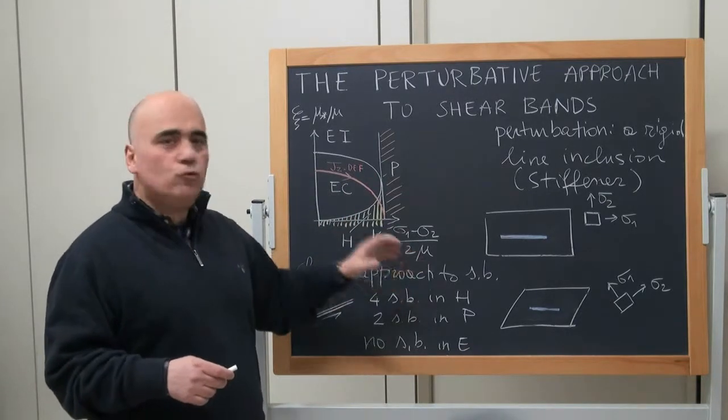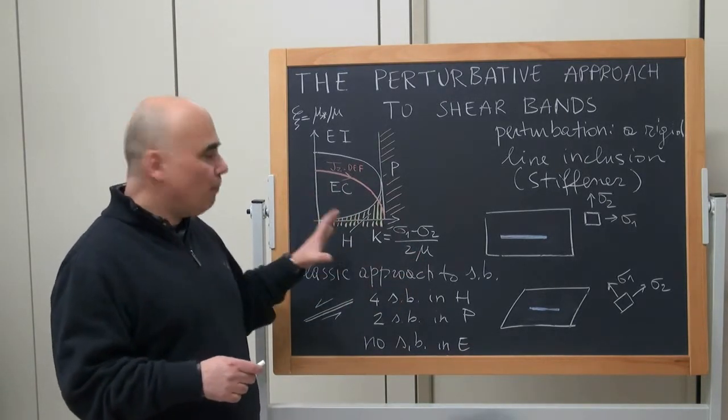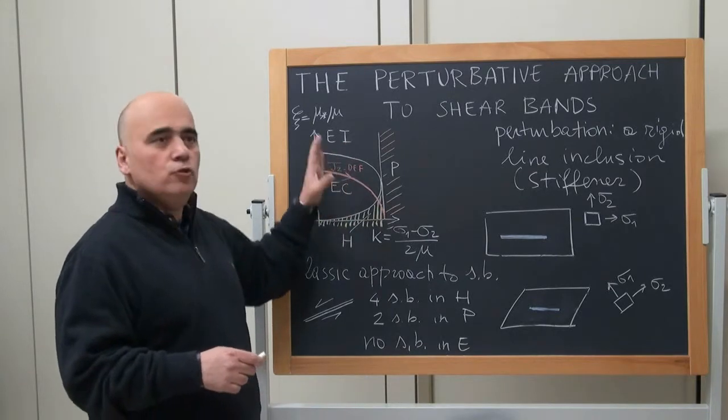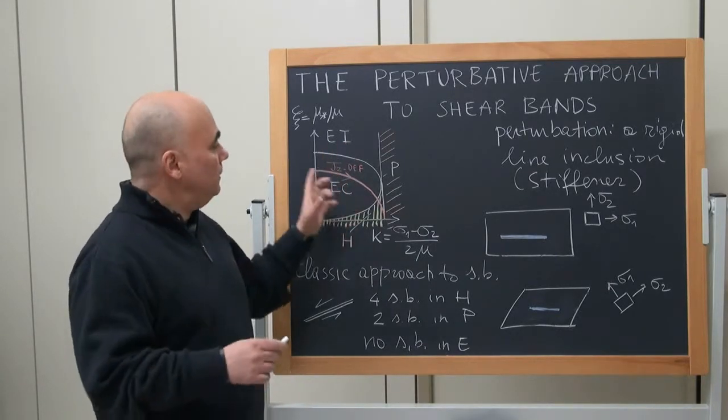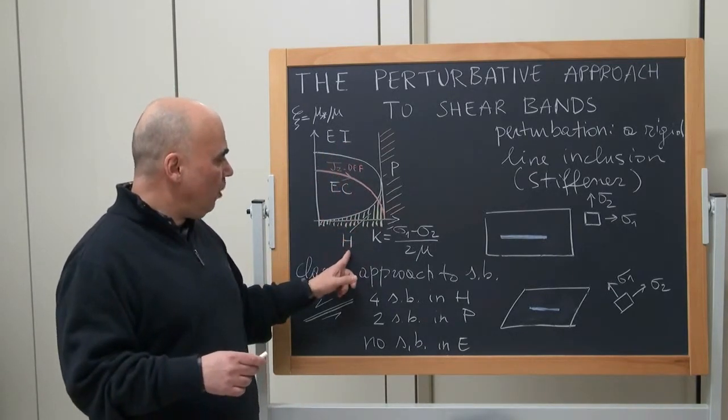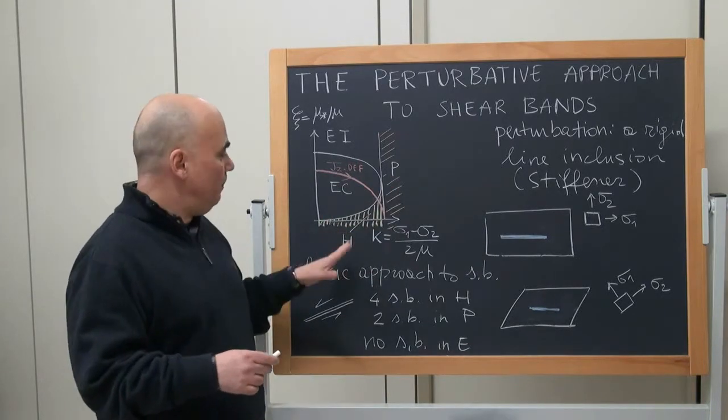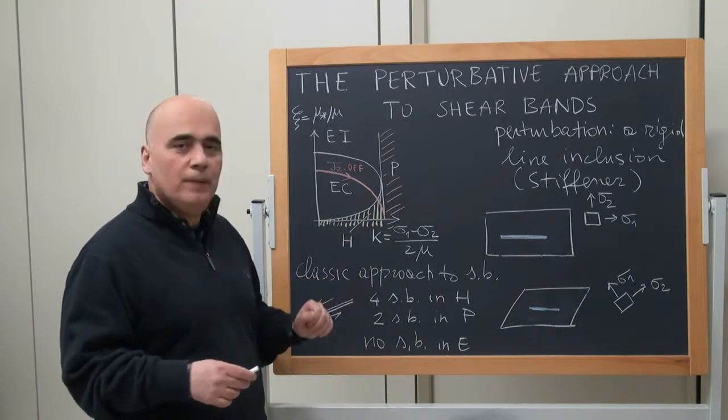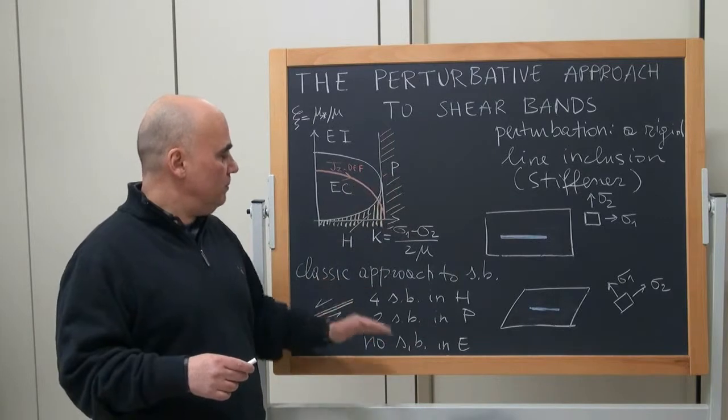The classical approach to shear bands is that shear bands are impossible in the elliptic regime, so they do not occur. They become possible in the hyperbolic and in the parabolic regime. In the hyperbolic regime there are four shear bands and in the parabolic regime there are two.